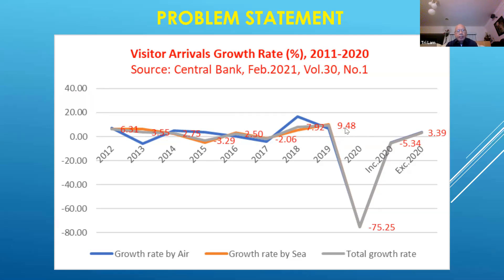The red numbers represent the average growth rate for these 10 years. During last year's pandemic, the growth rate from 2019 to 2020 was negative 75 percent. Including the pandemic effect, the average growth rate is negative 5.34 percent, and negative 3.39 percent excluding the pandemic. Obviously, tourist arrivals by air over the last 10 years have been very unstable and volatile, with a small average growth rate.